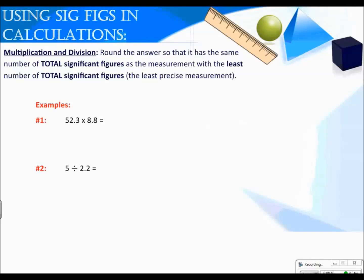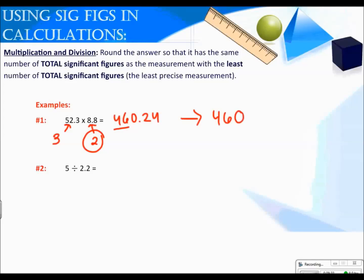The rules for rounding with significant figures in multiplication and division are different. Round the answer so that it has the same number of total significant figures as the measurement with the least number of total significant figures. This time we're not looking at decimal places — we're looking at the entire number. When I multiply 52.3 and 8.8, I get 460.24. My first measurement has three significant figures and my second has two. I always round to the least precise measurement, so my answer needs two sig figs. Rounding to 46 wouldn't make sense, so I round to 460. Without a decimal at the end, that last zero is not significant, so I still have two significant figures.